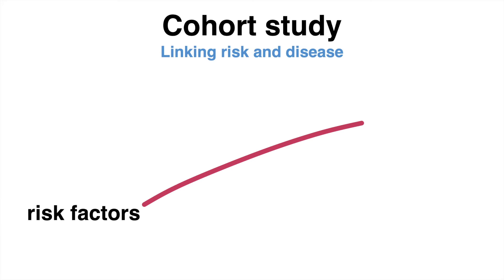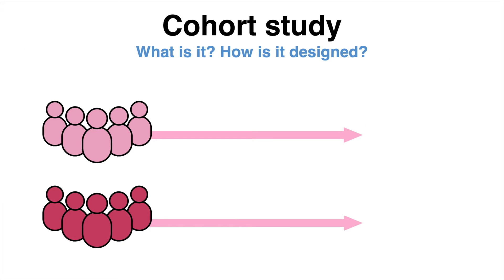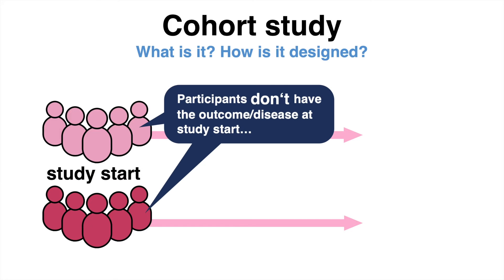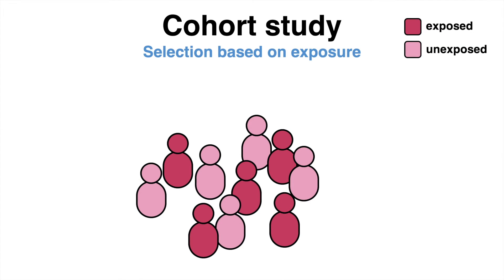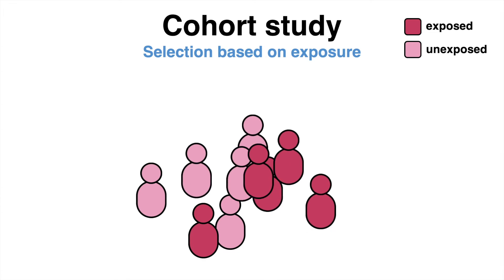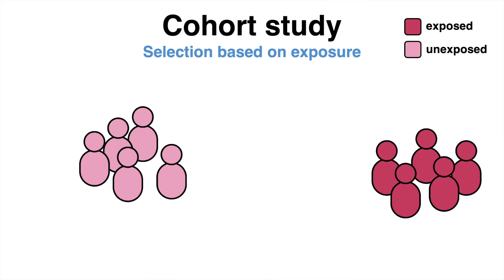the aim of a cohort study is to link risk factors and diseases. Importantly, the participants of a cohort study do not have the disease of interest at the start. Instead, the cohorts are initially defined based on some common characteristic. The participants are chosen based on their exposure — some participants have the exposure at the time the study is initiated, others don't. These two groups form the cohorts.